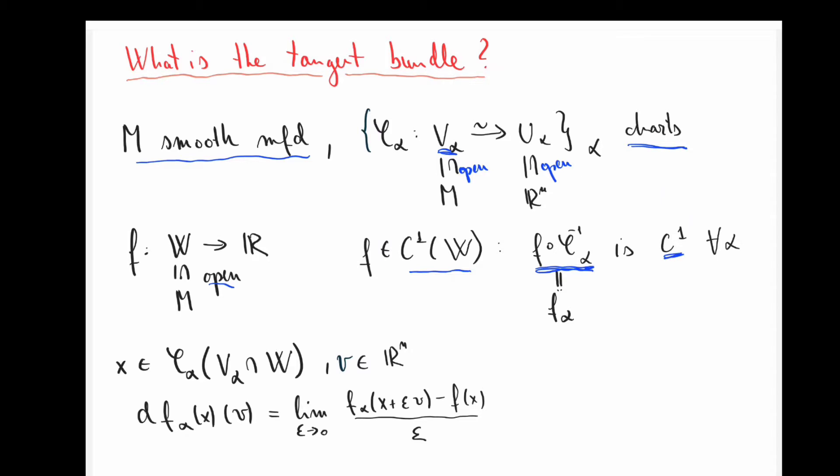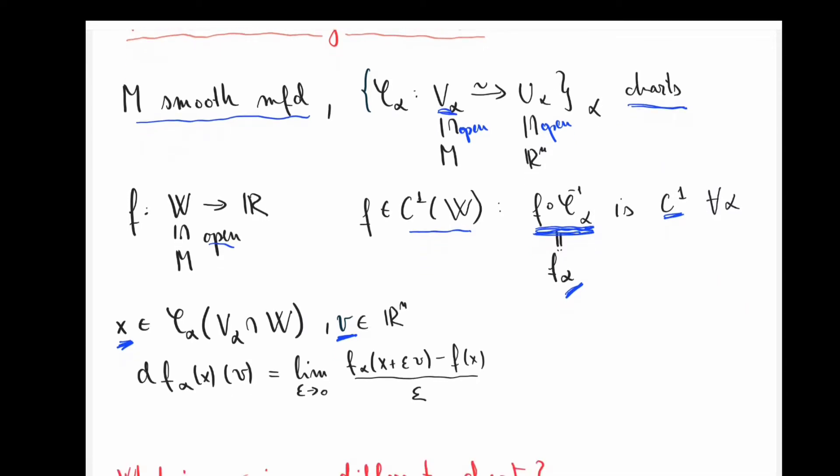And then being a smooth manifold makes this a really good notion. Now, the tangent bundle comes in when you want to understand directional derivatives of this function f. Now, what you can do is, at this point, you can just take directional derivatives of these functions f alpha at various points x and in various directions v, where v are just simply vectors in r to the n, and you do this in a way that you learned in calculus.